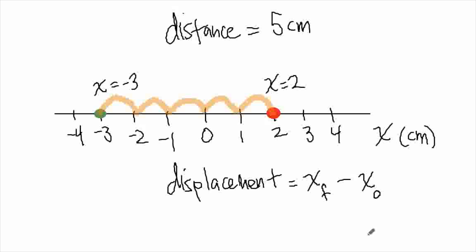We will be finding the difference between different variable values so much in this class that we actually have an abbreviation for it. Whenever we want to know the difference between the final and initial value, we'll use a triangle symbol — the delta symbol from the Greek alphabet. That signifies some final value minus some initial value. So you'll see me say delta x, or delta y, or delta whatever variable I want to take the corresponding difference for. Let's do some examples using the delta notation to find the displacement.